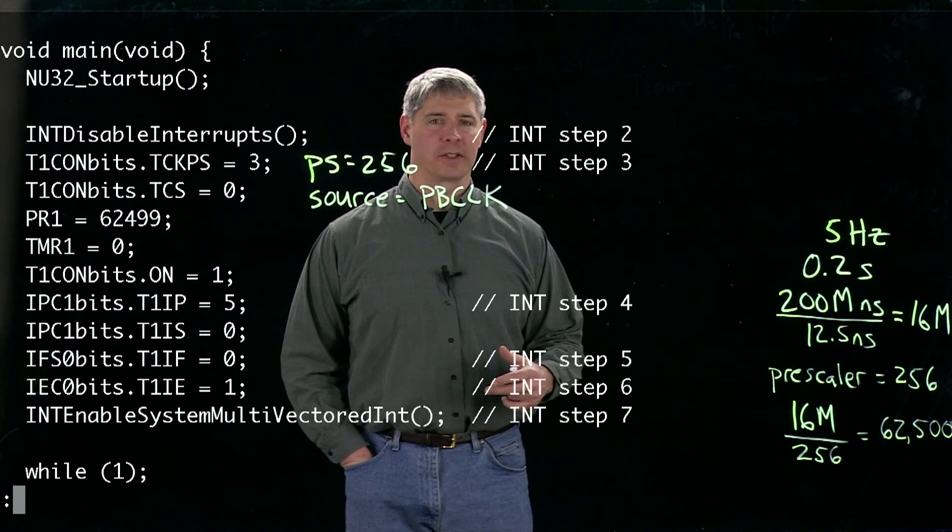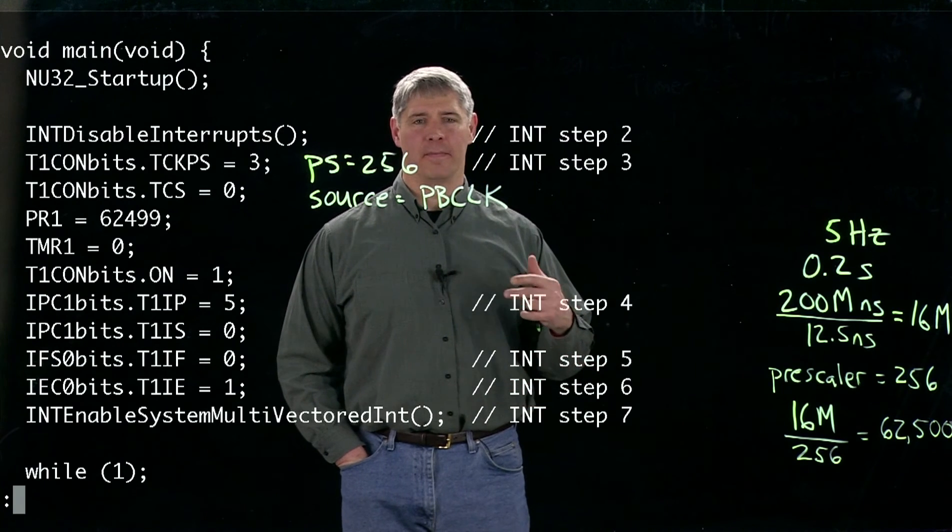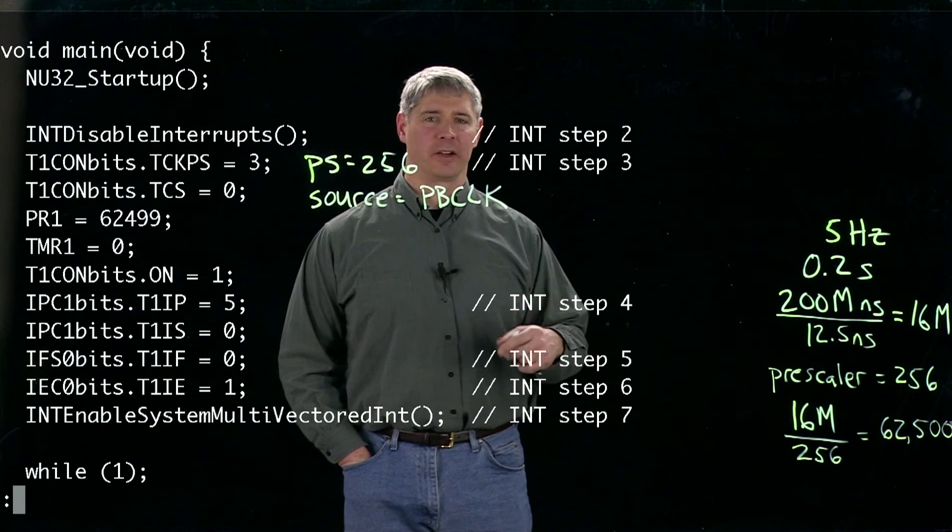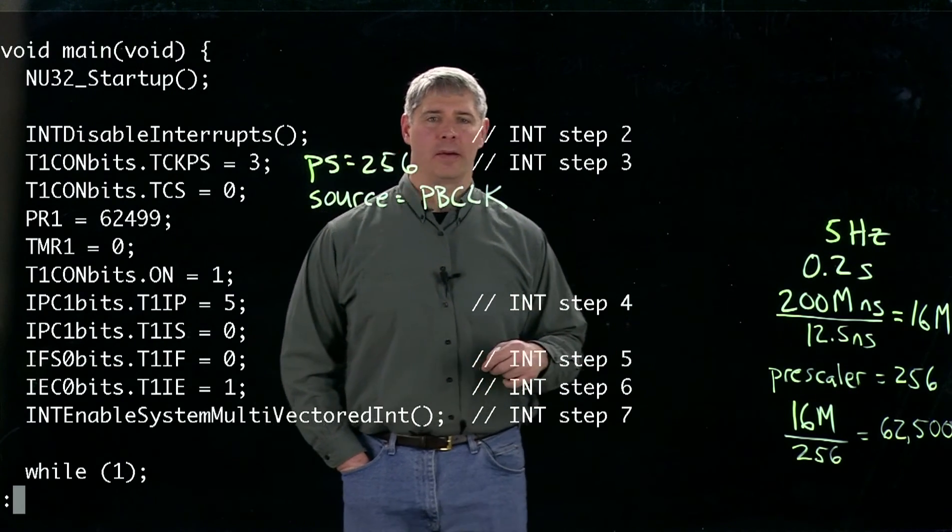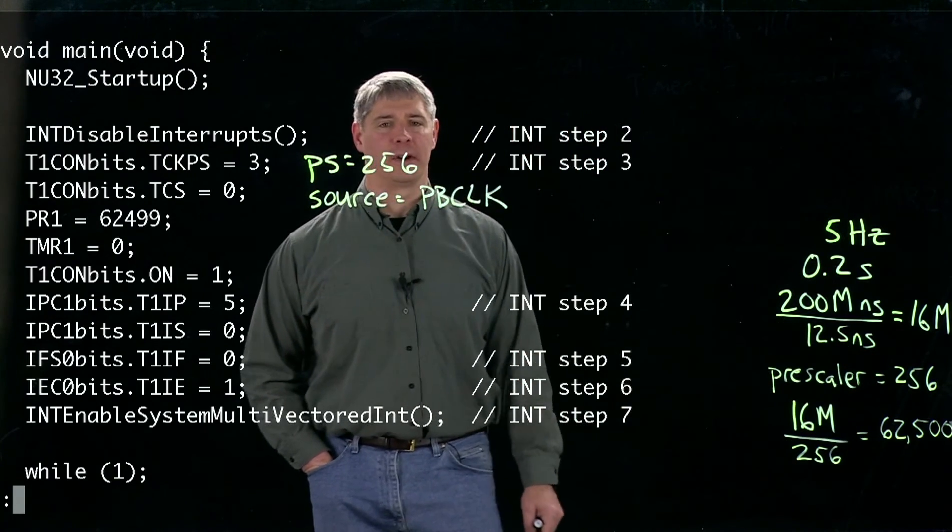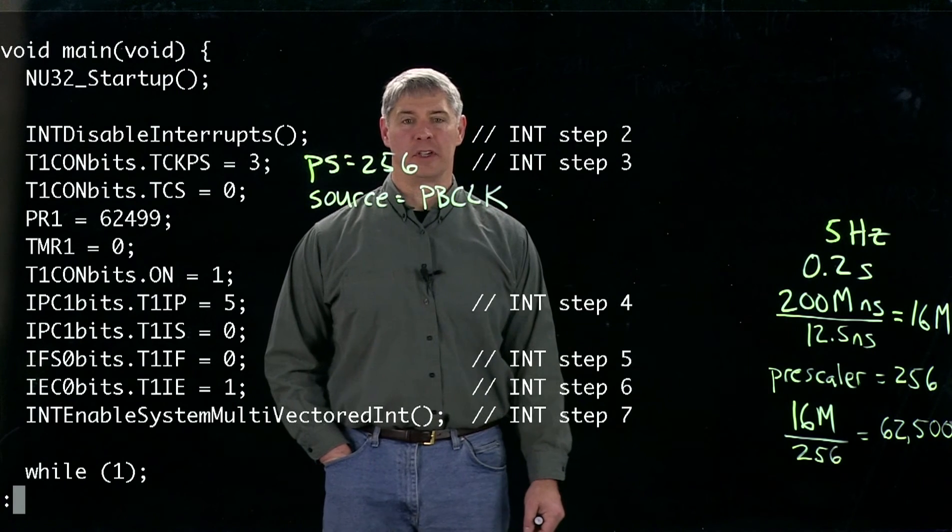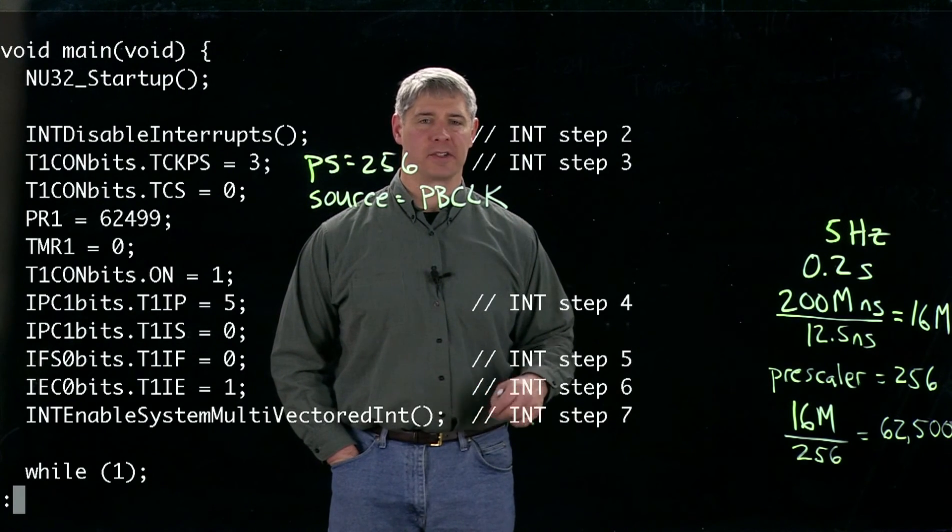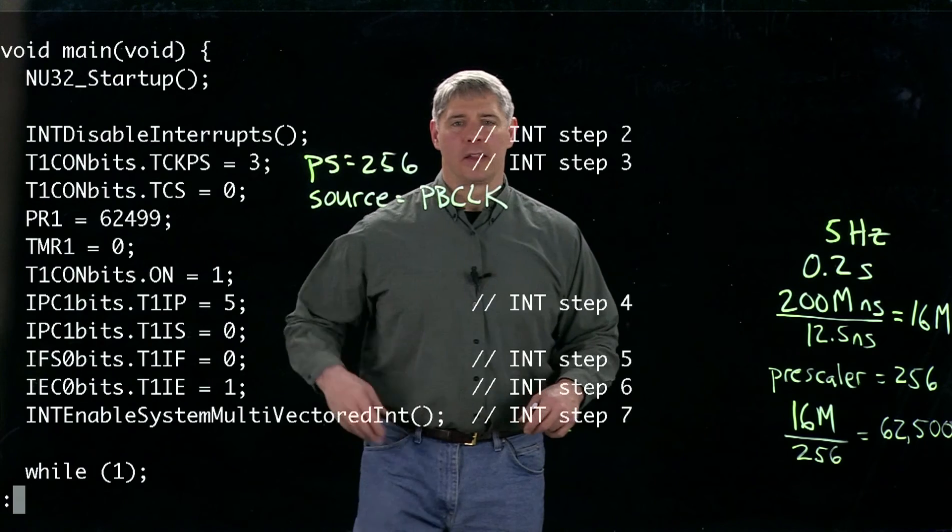outputs from the pre-scaler between every rollover. Okay, so that makes sure now we have 256 times 62,500, or 16 million peripheral bus clock pulses between every rollover. Then the